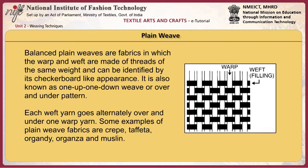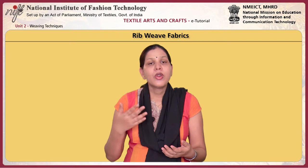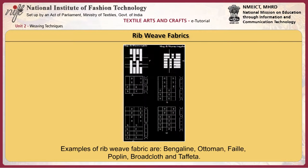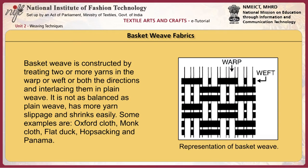The plain weave may also have variations. Rib effect is produced by using coarser yarns in the filling direction or by more warp than filling yarns per inch. Some examples of rib weave fabric are bengaline, ottoman, faille, poplin, broadcloth and taffeta. Basket weave is constructed by treating two or more yarns in the warp or weft or both directions and interlacing them in plain weave. It is not as balanced as plain weave and has more yarn slippage and shrinks easily. Some examples are oxford cloth, monks cloth, flat duck, hopsack and panama.